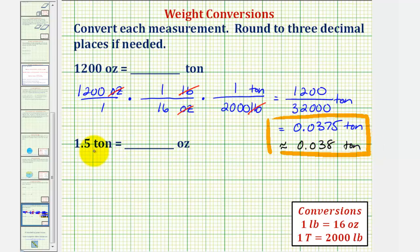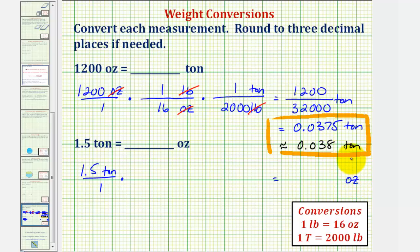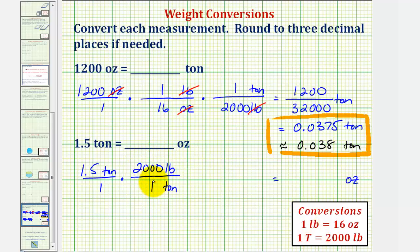Now for our second example, we want to convert 1.5 tons to ounces. We'll use the same process, so we'll write 1.5 tons over 1 in fraction form and multiply by unit fractions to convert to ounces. We'll first convert tons to pounds, and then pounds to ounces. We want tons to simplify out, so we'll write tons in the denominator and pounds in the numerator. The conversion is 2,000 pounds equals 1 ton. Notice how tons simplifies out.